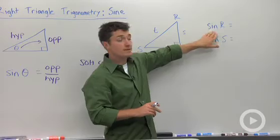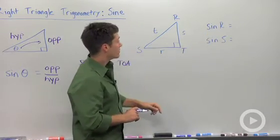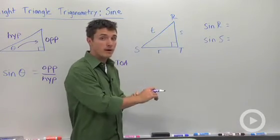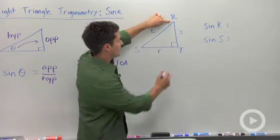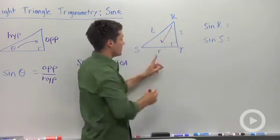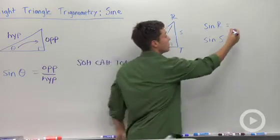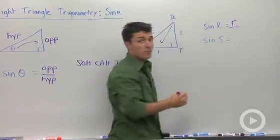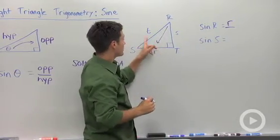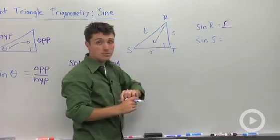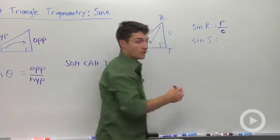I'm going to say that the sine of R is going to be the relationship of the opposite side to the hypotenuse. So if I look at R, the side that is opposite is lowercase r. So that's going to be the numerator of my ratio. The opposite side is r. The hypotenuse is t. So that's going to be my denominator.